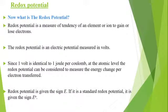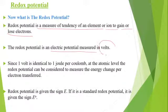Basically, Redox Potential is a measure of the tendency of an element or an ion to gain or lose electrons, termed as Redox Potential. It is an electric potential and is measured in Volts. Since 1 Volt is identical to 1 Joule per Coulomb, at the atomic level Redox Potential can measure the energy change per electron transfer.